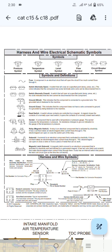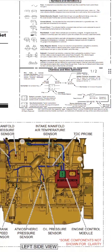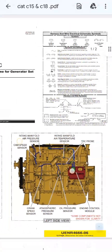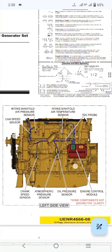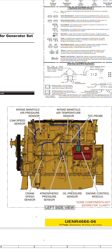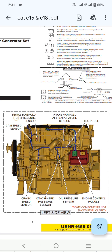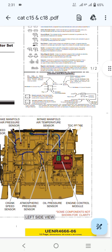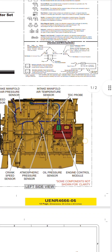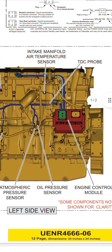You can see here the switches and sensors working like switches. Now moving to the engine. As you can see the complete engine left side view — cam shaft speed sensor, intake manifold pressure and air pressure sensor location, intake manifold air temperature sensor, and TDC probe.